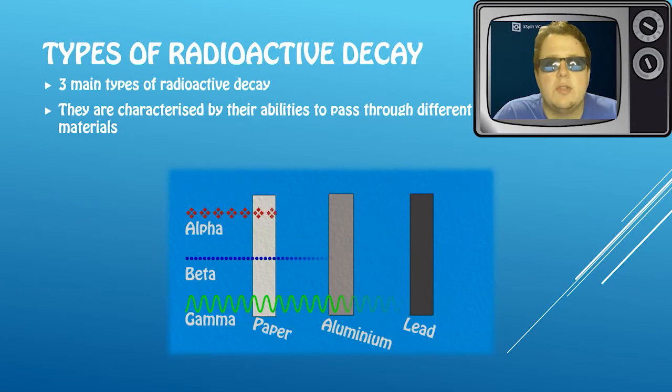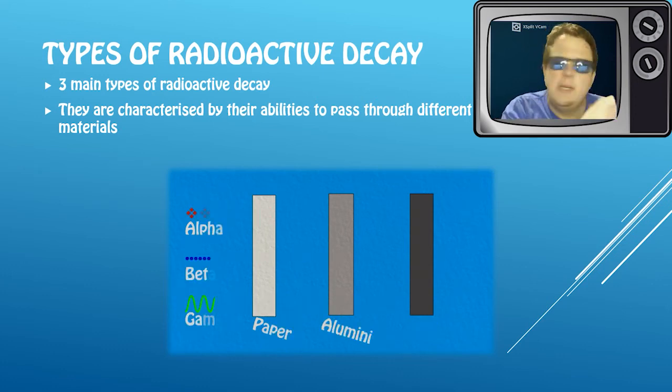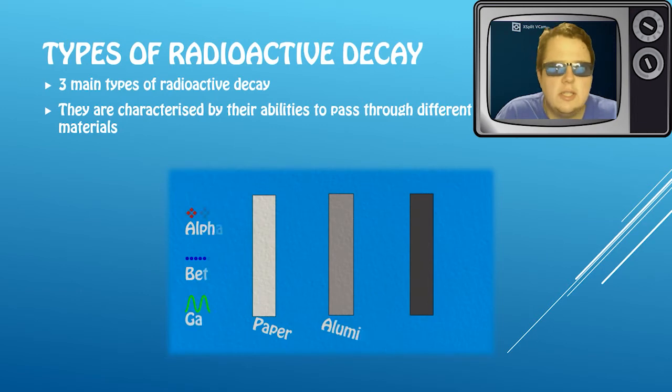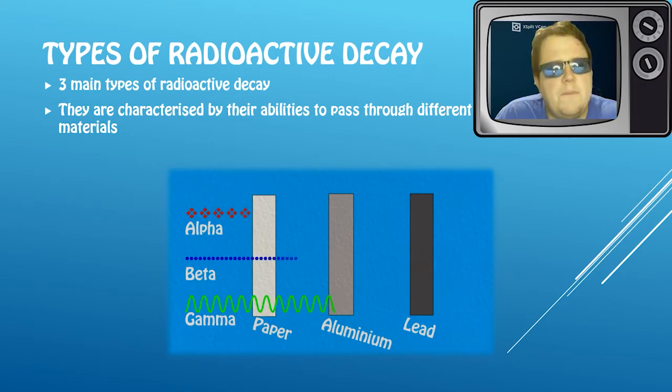Okay, so for GCSE we deal with three main types of radioactive decay, and you should be aware of their characteristics, especially the ability to penetrate different materials. So below here we have alpha, beta, and gamma particles. More on these in a minute in terms of what they are, but hopefully what you can see is that alpha particles are the largest, and alpha particles you can see here are stopped by things like paper or your skin.